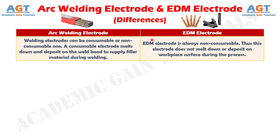Difference number 1: arc welding electrodes can be consumable or non-consumable. A consumable electrode melts down and deposits on the weld bead to supply filler material during welding, whereas electric discharge machining electrode is always non-consumable. Thus, this electrode does not melt down or deposit on the workpiece surface during the process.